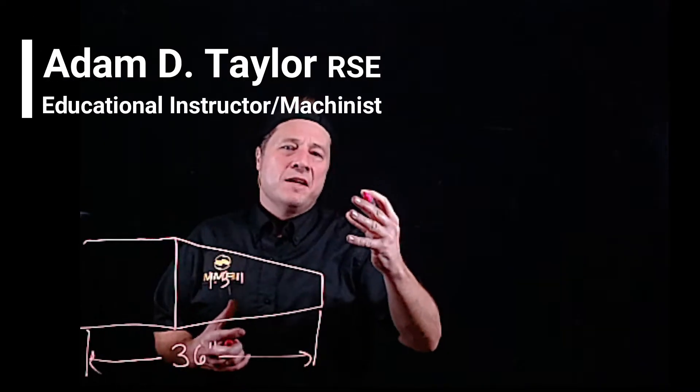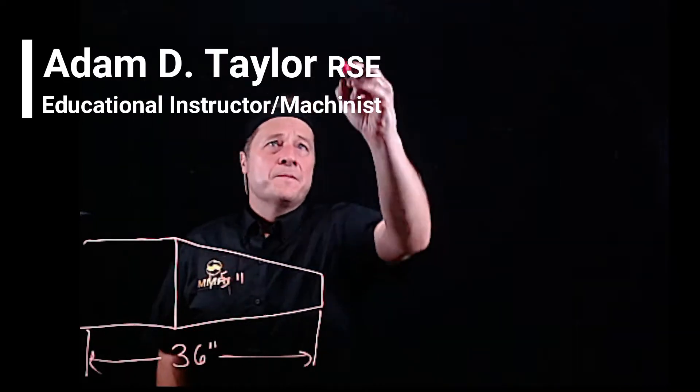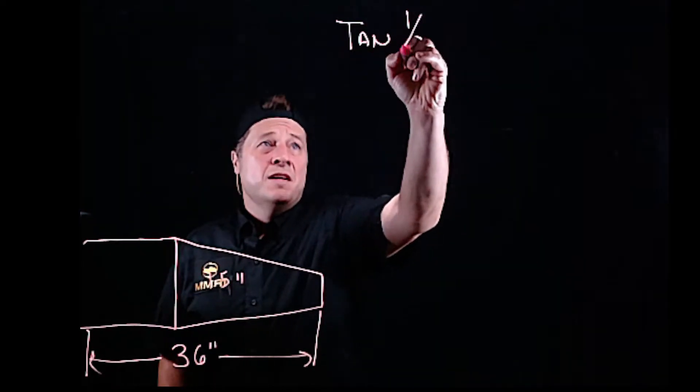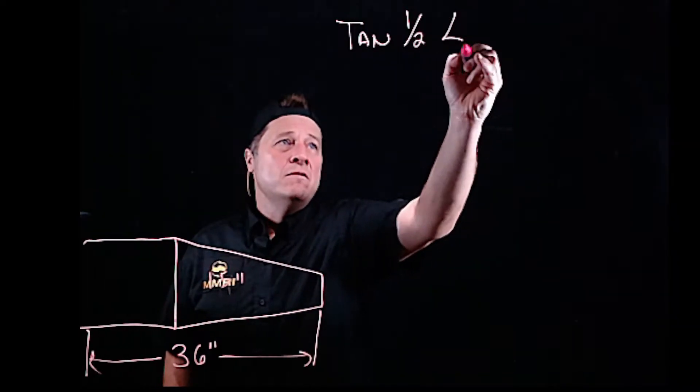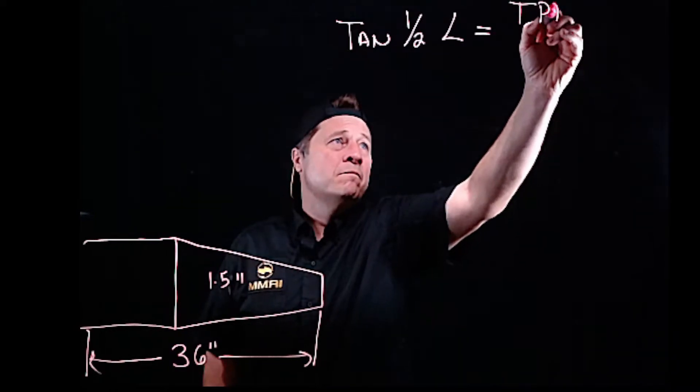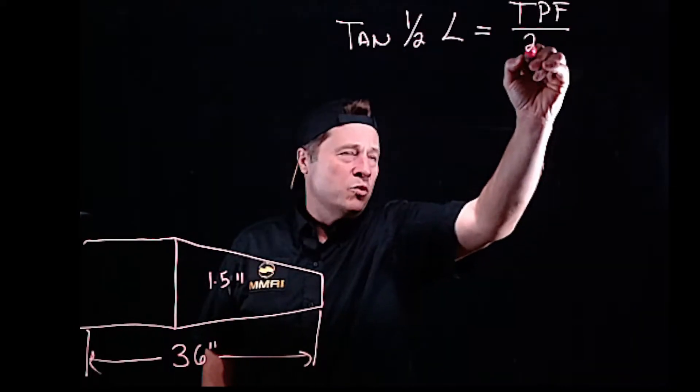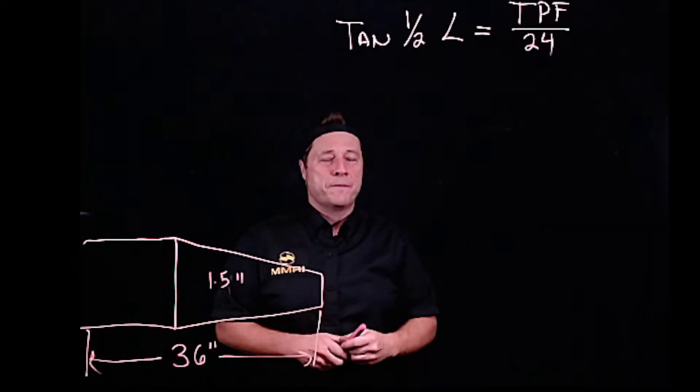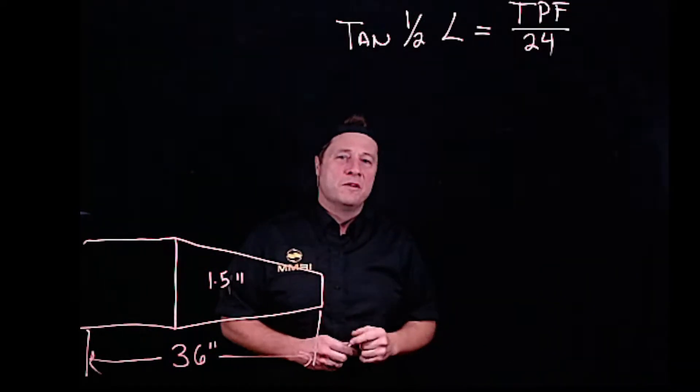If I want to set up my compound rest to cut a taper, the tangent of half of the angle is equal to the taper per foot divided by 24. I know it looks complicated, it's not complicated. Let me explain how this formula works.